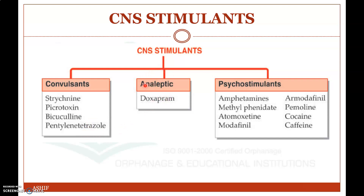An analeptic example is doxapram, and psychostimulant examples include amphetamine, methylphenidate, atomoxetine, modafinil, armodafinil, pemolin, cocaine, and caffeine.